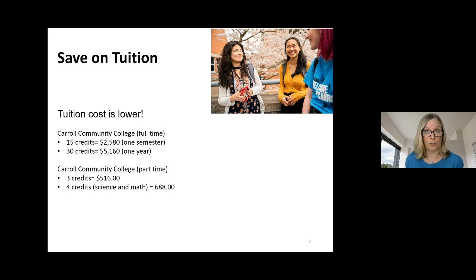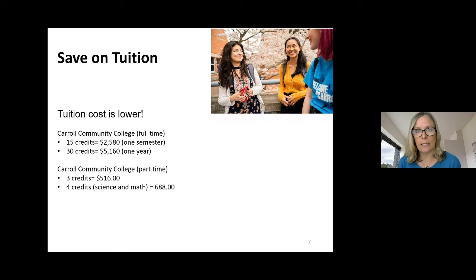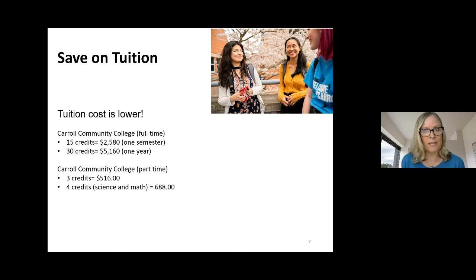Consider the cost savings: when you get that final tuition bill for a four-year school and realize you might be taking on more debt than expected, many students start at Carroll instead. By paying that reduced tuition rate for the first two years, it becomes more affordable to live on campus for just two years at the higher tuition rate. Paying the lesser rate first makes those last two years at a four-year school more manageable. Just keep those things in mind.